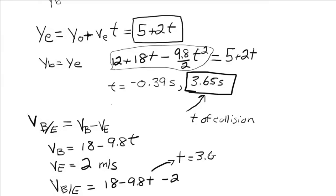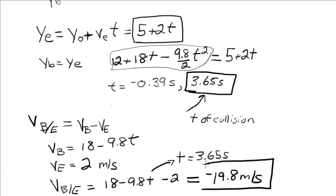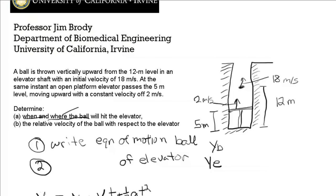Evaluating at t equals 3.65 seconds and plugging into your calculator gives minus 19.8 meters per second. That's how fast the ball is moving relative to the elevator when it hits. Physically: the ball was thrown up at 18 m/s, rose to some peak height, then came falling back down while the platform progressed upward — so at the collision, the ball is moving downward and the platform upward, giving us that large relative velocity.